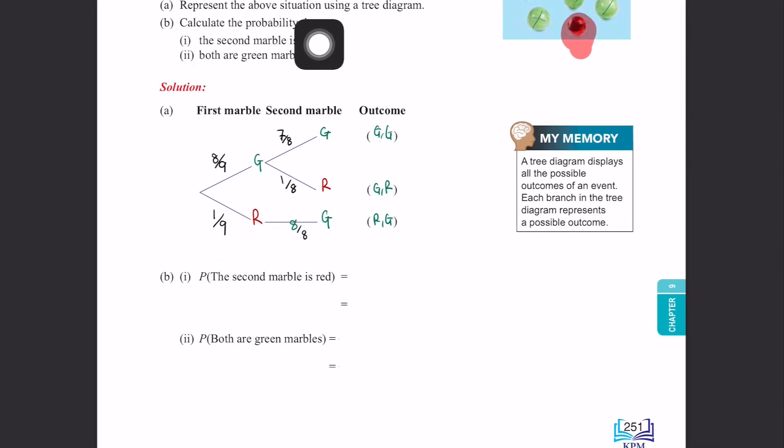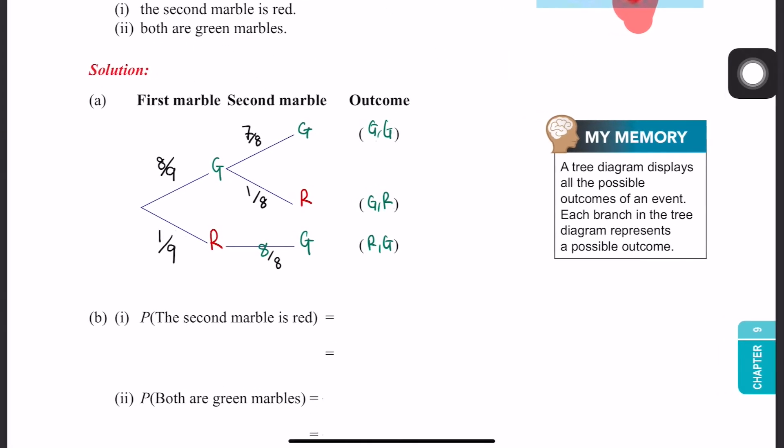Calculate the probability that the second marble is red. So second marble is red. The second marble, we find the second one. This is the first marble, this is the second marble. We want the second marble to be red. This one, right?